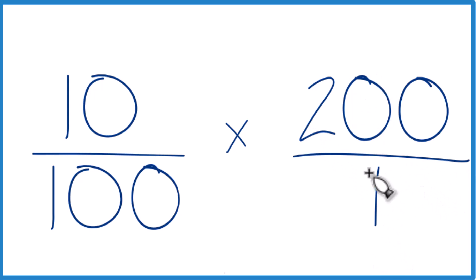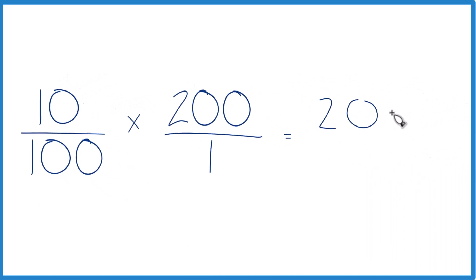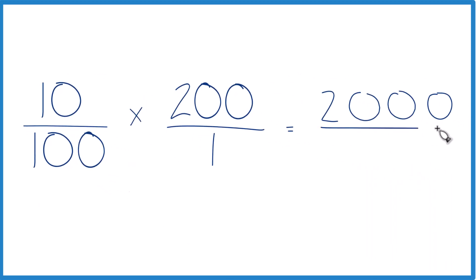Because 200 over 1, that's still just 200. But now we multiply 10 times 200, we get 2,000. And 100 times 1, we get 100. And 2,000 divided by 100, that's 20 over 1, or 20. So 10% of 200,